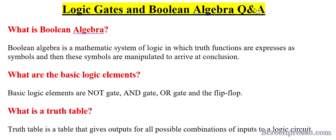What is boolean algebra? Algebra is a part of mathematics, and boolean algebra is a mathematical system of logic in which truth functions are expressed as symbols, and then these symbols are manipulated to arrive at a conclusion. So boolean algebra is essentially a mathematical system of logic.